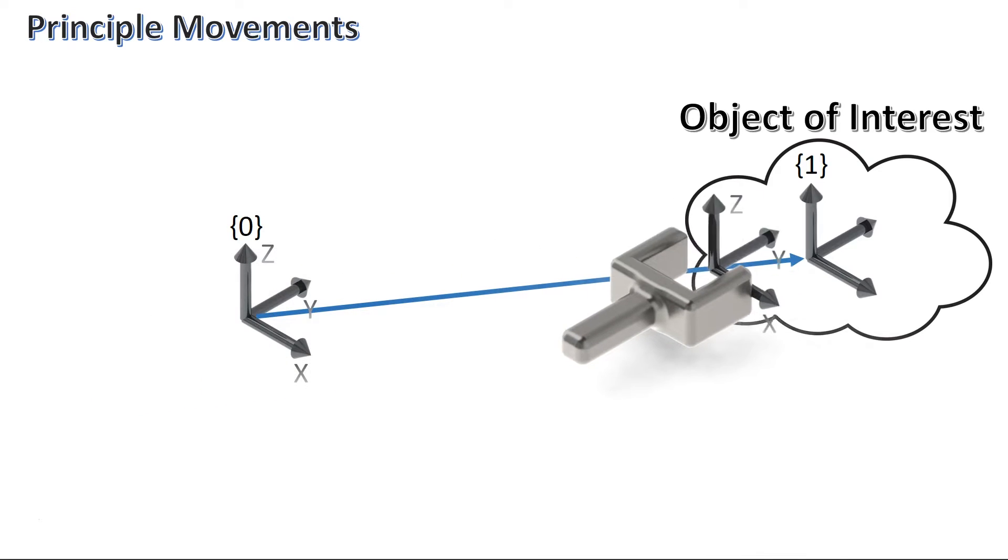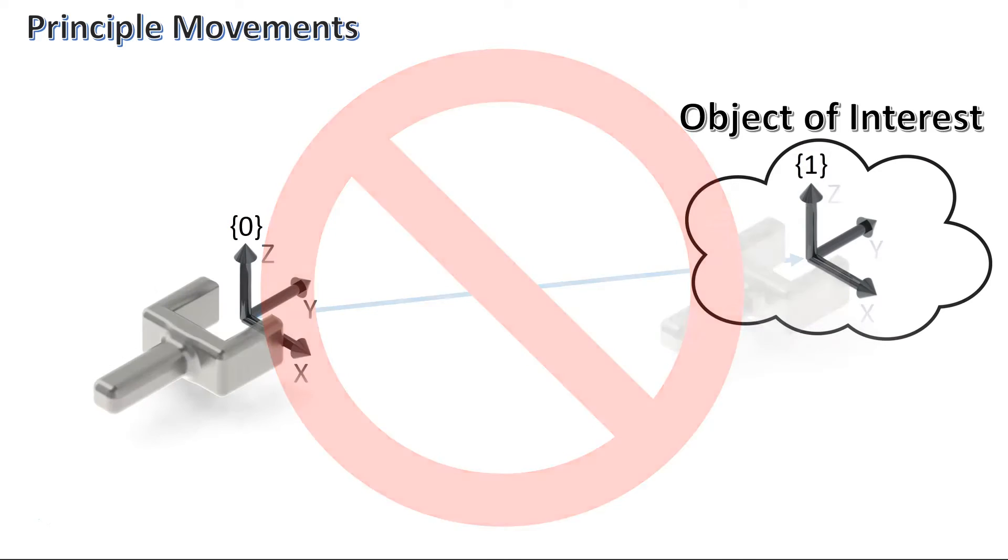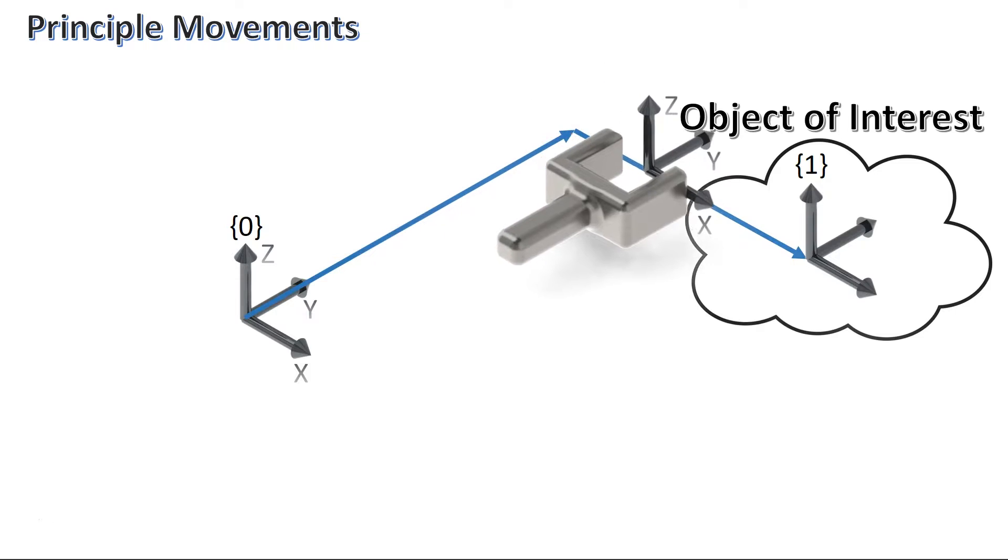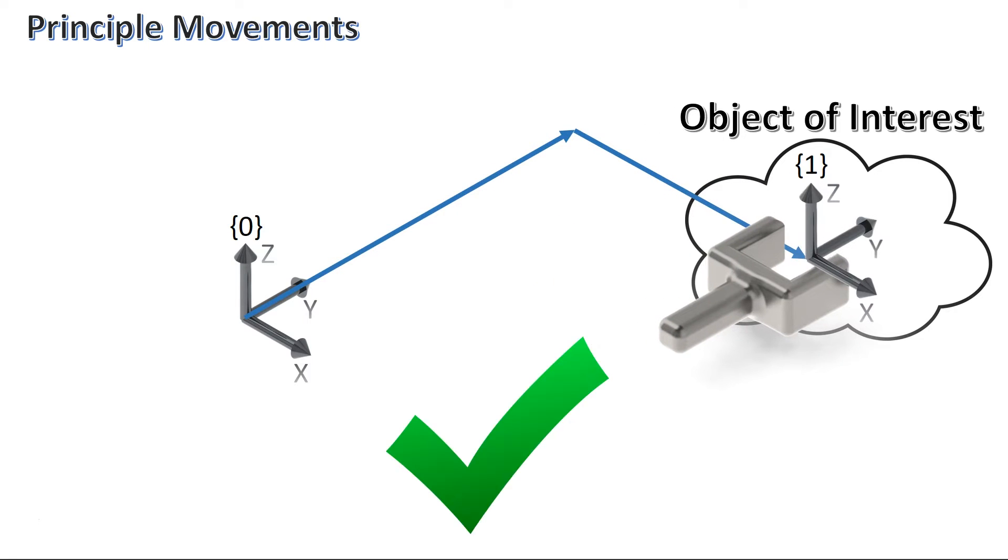Now, when I say principal movements, I'm talking about very simple rotations about and translations along an object's coordinate axes. By thinking about movement in this way, it'll allow us to combine these principal movements to solve more complicated problems.